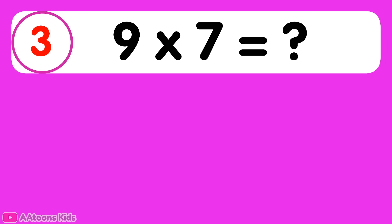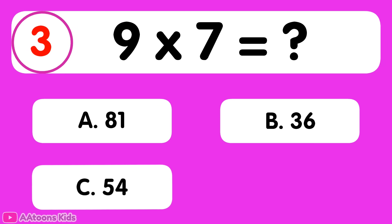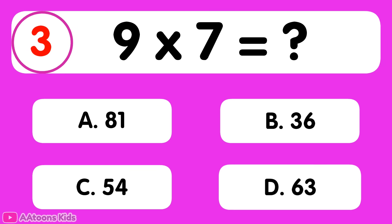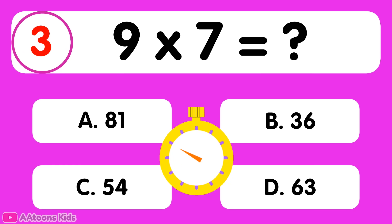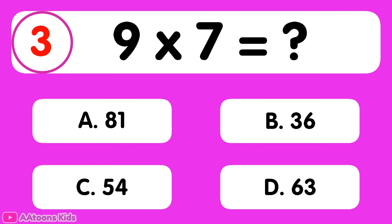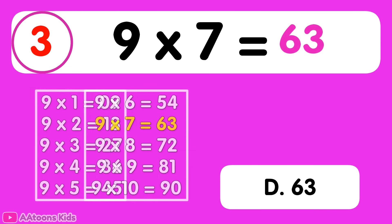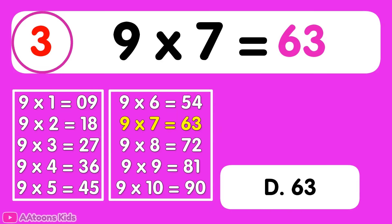9 times 7 is equal to... 63. 9 times 7 is 63.